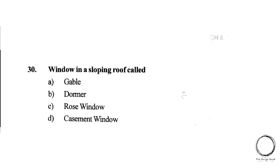Next, a window in a sloping roof is called A. Gable, B. Dormer, C. Rose Window, D. Casement Window. The right answer is option B, Dormer.